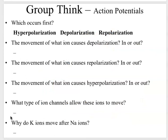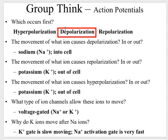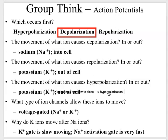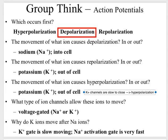For the group questions, I suggest going through these on your own and then scrolling down to check your answers. Sodium rushing into the cell causes depolarization — that's the upward spike. Potassium rushing out causes repolarization. Potassium going out in excess causes hyperpolarization because the potassium channels are slow to close. These are voltage-gated channels, and potassium ions move after sodium ions because the potassium gate is slow to open and close, while the sodium gate is very fast.